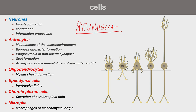We can divide neuroglia into several groups. One cell, microglia, is not a real glial cell even though it bears that name. Microglia is an important part of the macrophage system, able to phagocytize remnants of cells and foreign particles. It is part of the monocyte population and is a cell of mesenchymal origin.